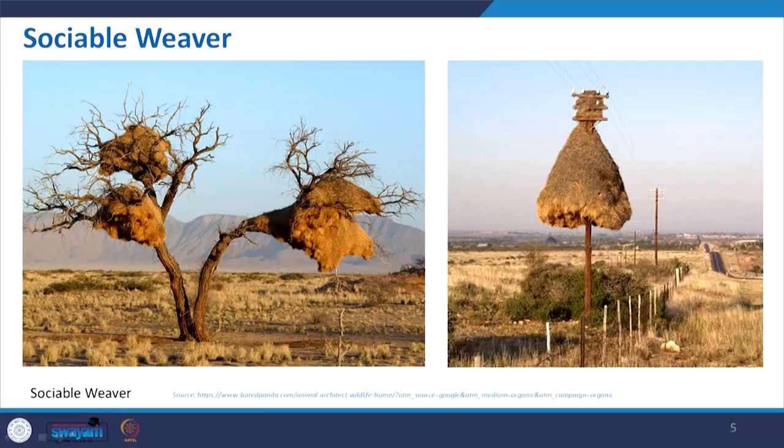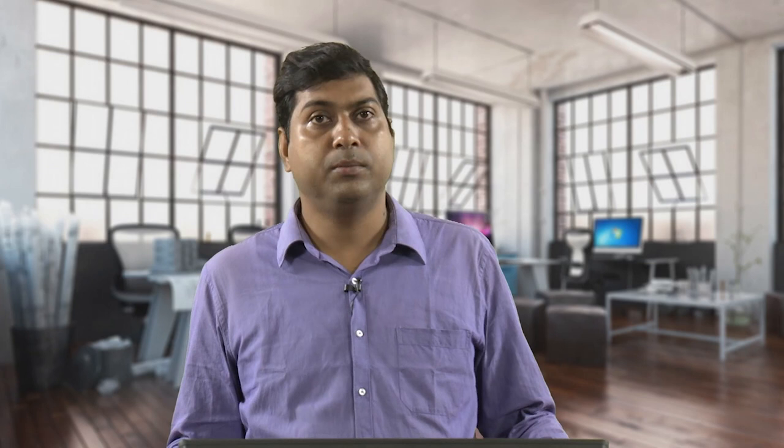Here are two more pictures of the Sociable Weaver nest — one built on a tree and another on a post. They build it over time and it represents community dwelling or mass housing. This kind of architectural feature for creating mass housing can be derived from this concept. For the material, they build it with multiple layers of grass and sticks so they can also maintain temperature fluctuation and protect inhabitants from wind and heat.